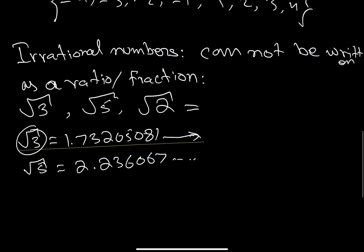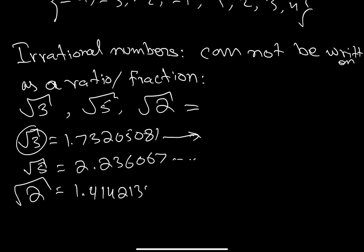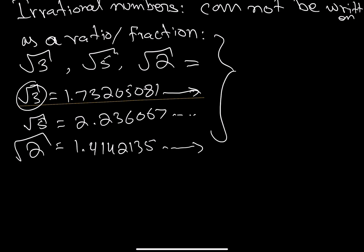Square root of 2 equals 1.41421356... and it keeps going. These cannot be expressed as a fraction, so we call them irrational numbers. Next time we'll cover application of simple math — addition, subtraction, multiplication, and division. Take care, and please don't forget to subscribe and like the channel. Thank you.